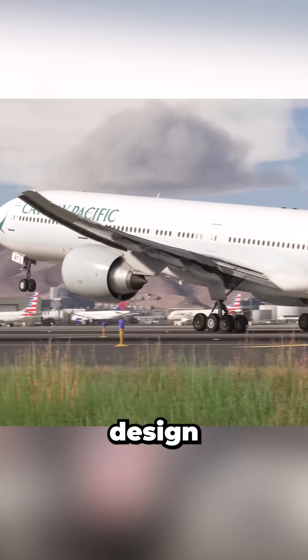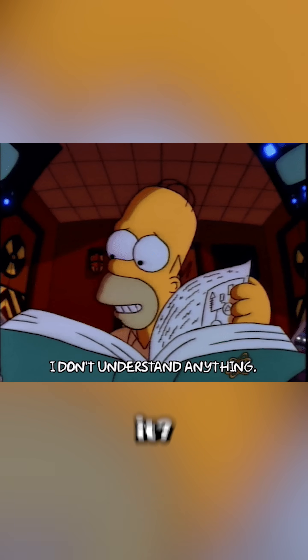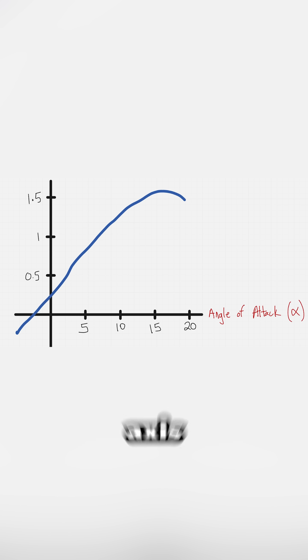This chart is crucial for aircraft design and performance, but how do you even read it? I'm an aerospace engineer, and the horizontal axis is the angle of attack, or alpha,